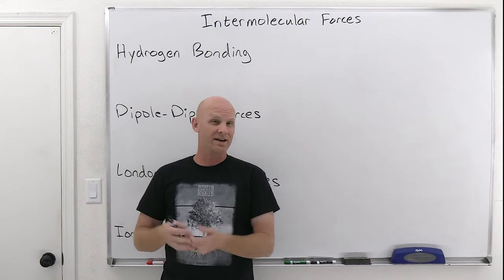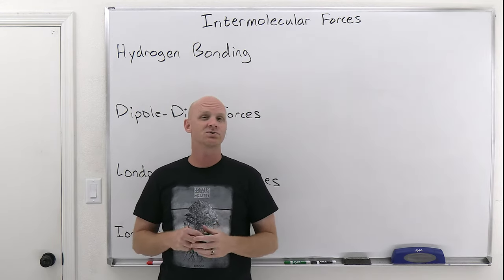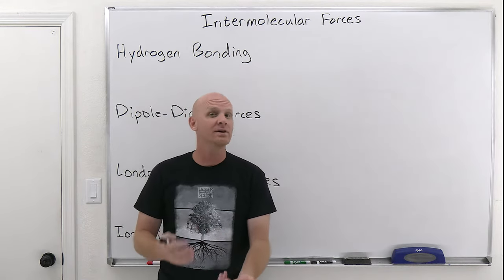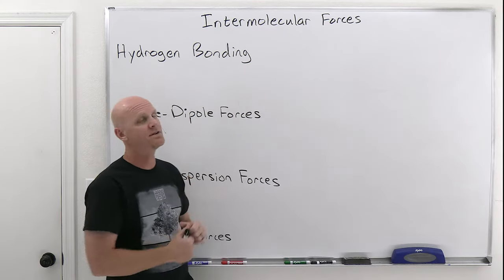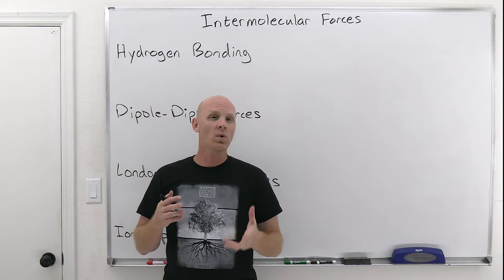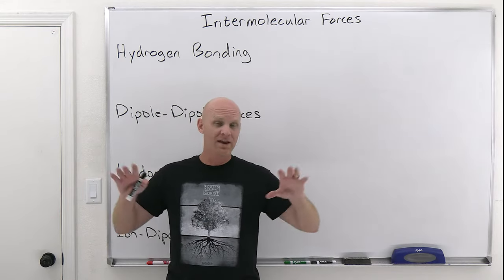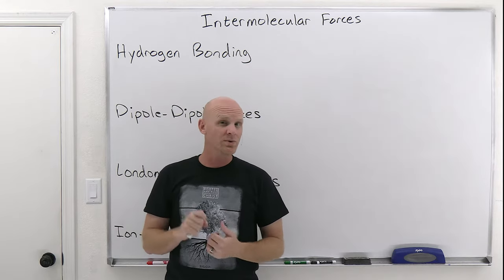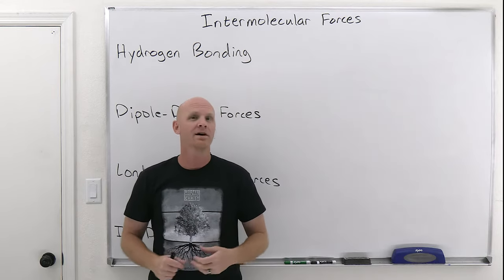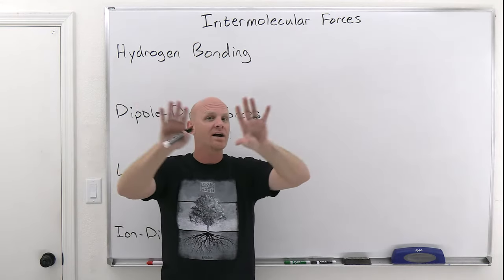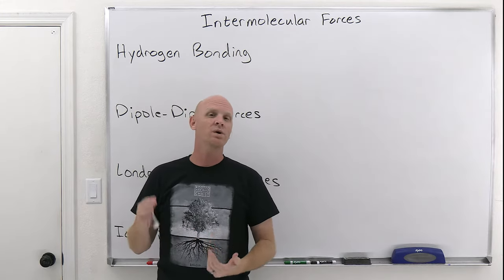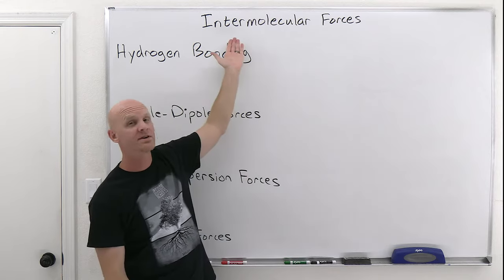In an ionic compound, all the ions are held together by ionic bonds. In a network covalent solid like diamond, all the atoms are held together by covalent bonds. But when you've got molecular compounds — like a molecular solid such as ice — the atoms within one molecule are held together by covalent bonds, but what holds separate molecules together in the ice crystal is something much weaker, which we call intermolecular forces.